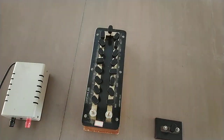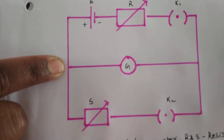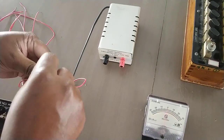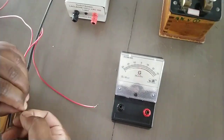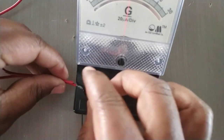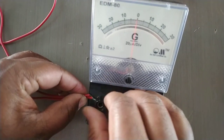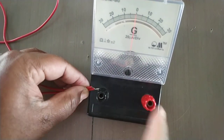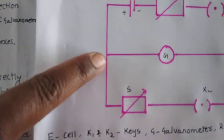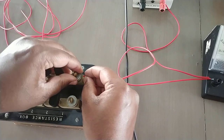Now let us begin with the connections. First, the positive of the cell is connected to the galvanometer. Again, to the same point, one end of a resistance box is also connected. So I will make them common at point G — the positive of the cell. From the positive of the cell we connect to the galvanometer. There is no polarity in the galvanometer, so you can choose any terminal. Then from the same end it is also connected to S, the resistance box.